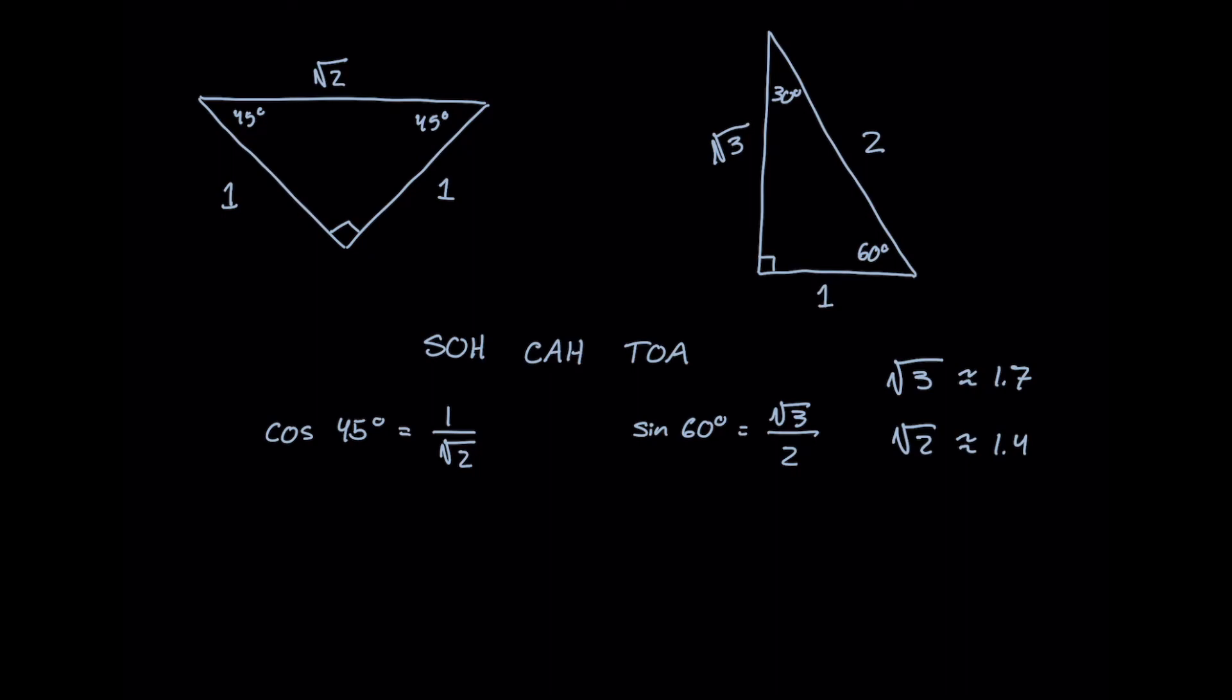Okay, so basically that just means that if we take 1.7 times 1.7 it will be approximately 3, and if we take 1.4 times 1.4 it'll be approximately 2. So how that will look in our calculations is something like this.